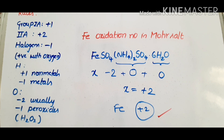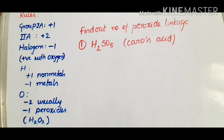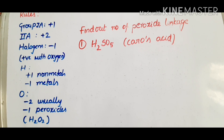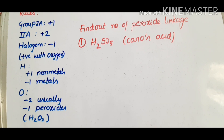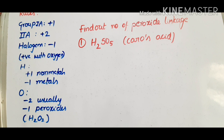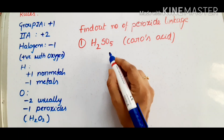The next example: find out the number of peroxide linkages in H2SO5. If you know the structure very well, you can find it directly. But through calculating the oxidation number, you can also do that.